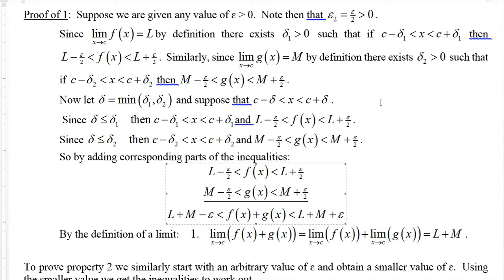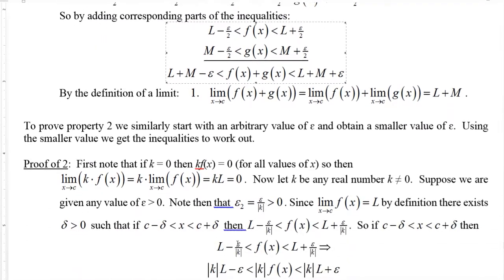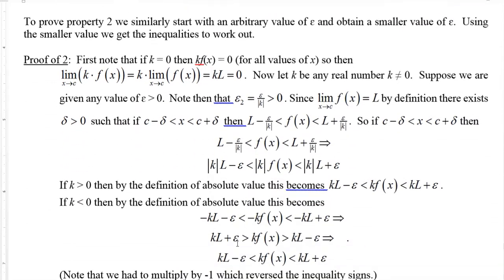So we just need to know our definitions with epsilons and deltas and be a little clever about picking the right modification of epsilon at the beginning. We do a similar thing to prove Property 2.